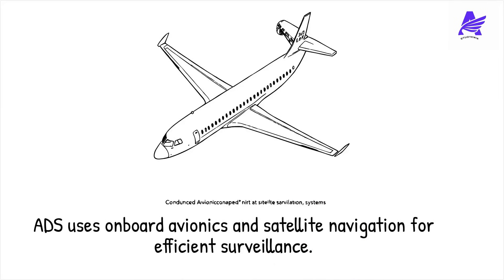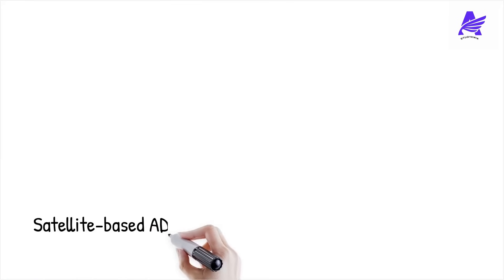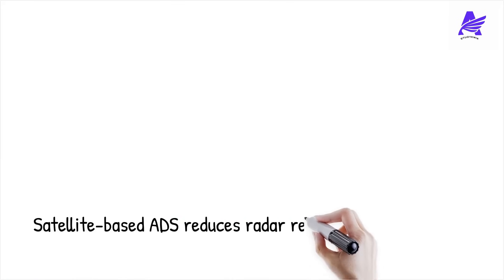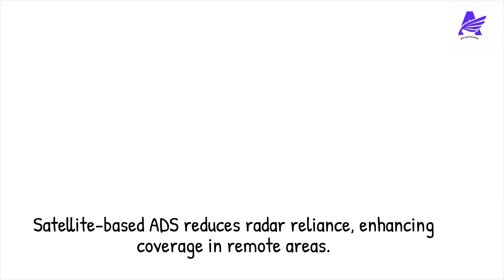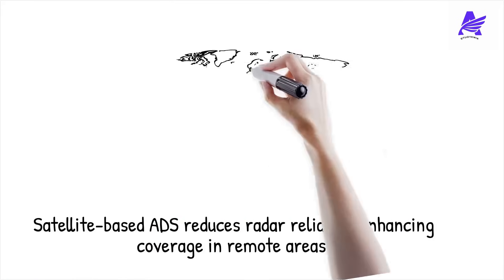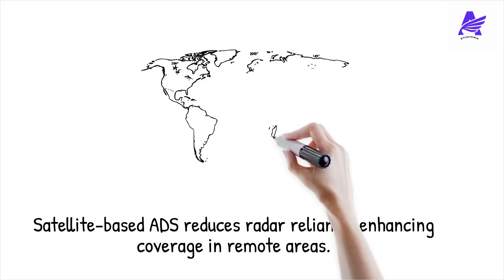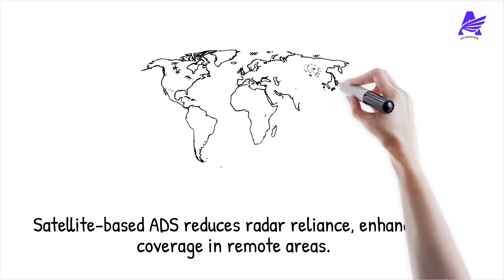ADS is called dependent because it relies on the aircraft's navigation system to determine its position. This transition to satellite-based air traffic management reduces reliance on radar and improves coverage in remote and oceanic areas. There are two main types of ADS: